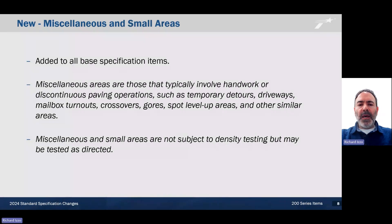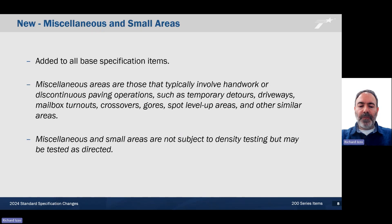We've added miscellaneous and small areas to each item in the 200 series. We've added this to all base specification items. Miscellaneous areas are those that typically involve handwork or discontinuous paving operations. These may be temporary detours, driveways, crossovers, or similar areas. Miscellaneous and small areas are not subject to density testing, but may be tested as directed. So those are two things that we've added to all of the 200 series specifications.